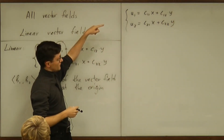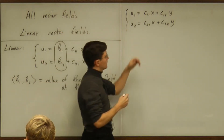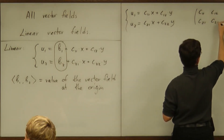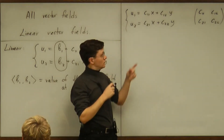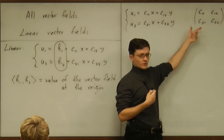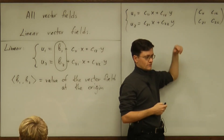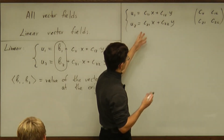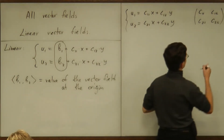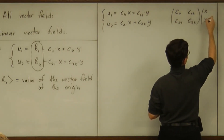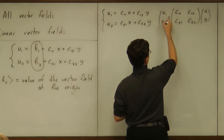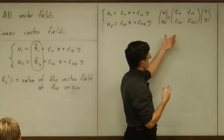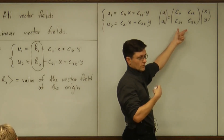That linear vector field is determined by four parameters, and the standard way of putting them together is to make a matrix: c11, c12, c21, c22. That is the analog of a slope of a line from calculus one, but now it contains four numbers put together as a matrix. In some sense, the algebraic way of saying what happens here is that this matrix is multiplied by the vector (x, y), resulting in the vector (u1, u2) — that is just the linear algebra way of saying what happens, mimicking the concept of the slope being a number you multiply by. Now you multiply by a matrix, not a number.